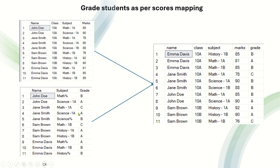The priority rule is: if the direct subject name is mentioned, that particular grade will be assigned. If the direct subject is not mentioned and a wildcard like science%, math%, etc. is present, then that will be considered. So direct exact matches take highest priority; wildcard matches are the fallback.